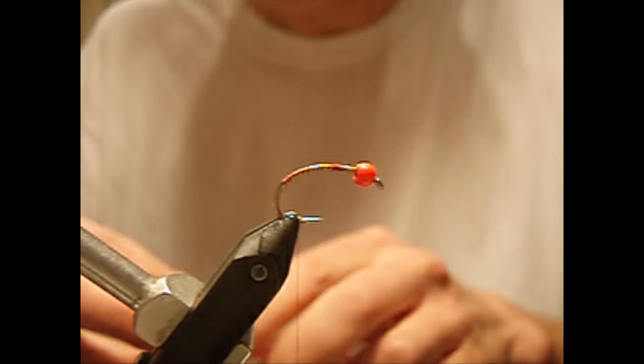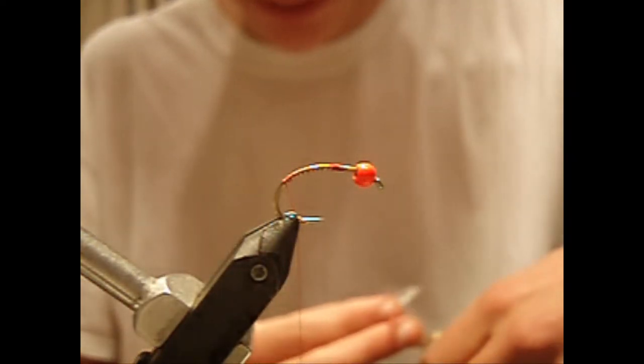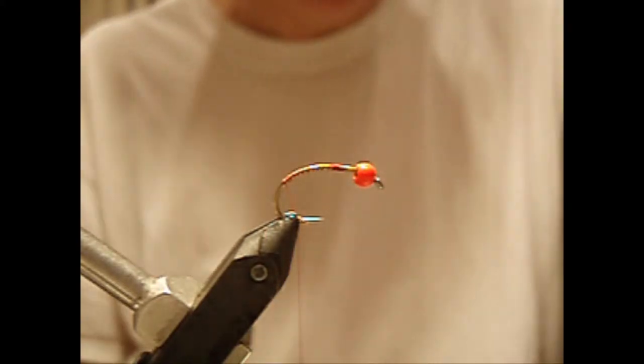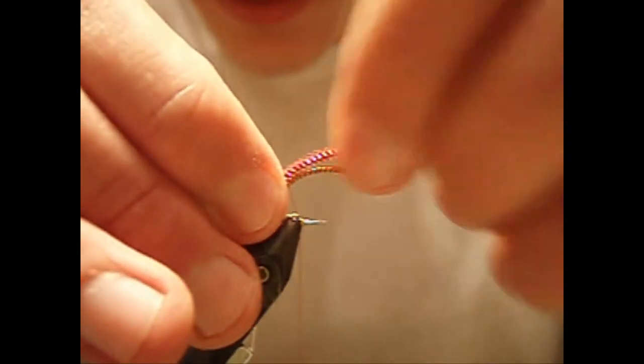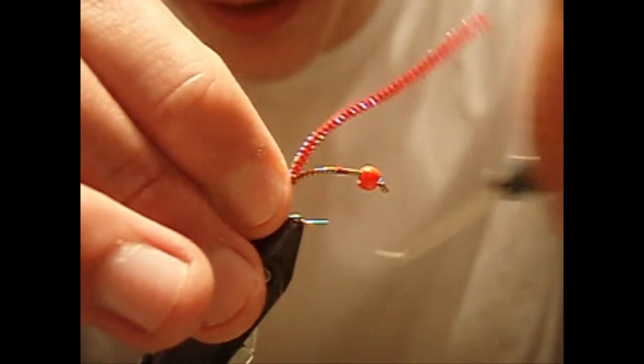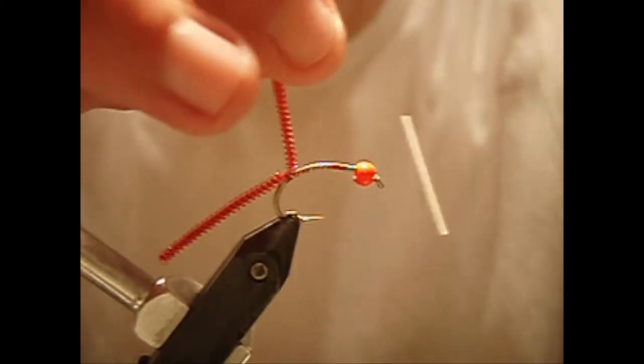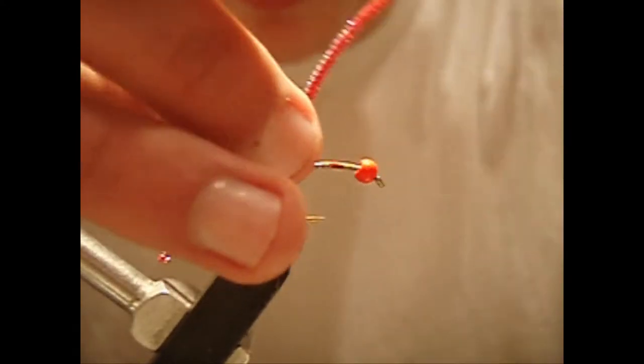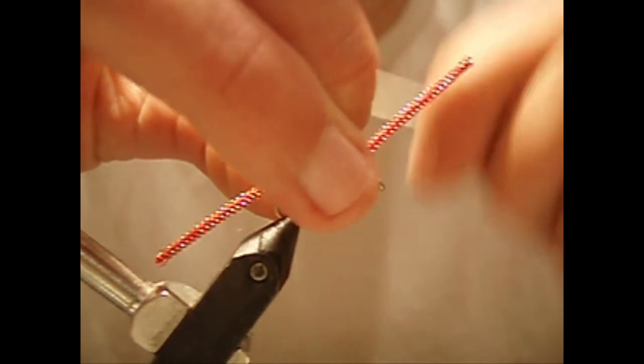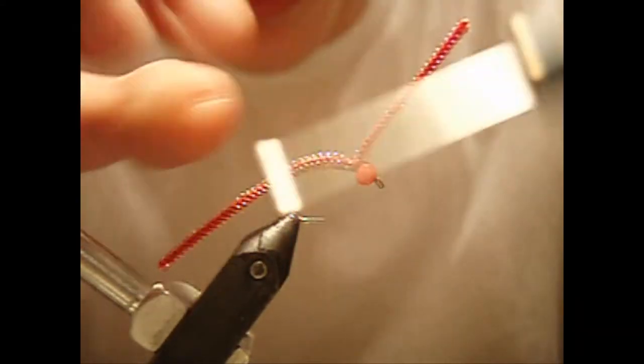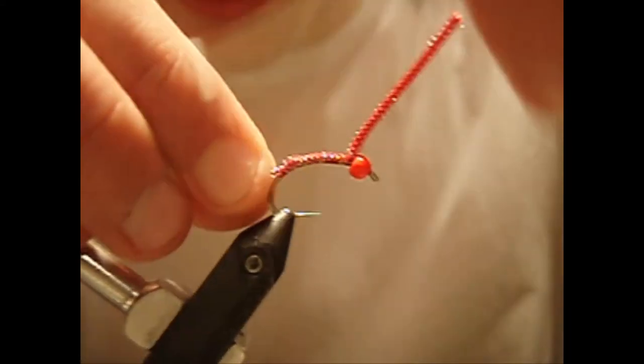Continuing from there, cut off a couple inches of your body material and tie it on securely at the back so it won't shift around or spin around your hook. Once you've done that, work your thread forward to right behind the bead and tie it down again. Then wrap over this material all the way back to the rear tie-in point.